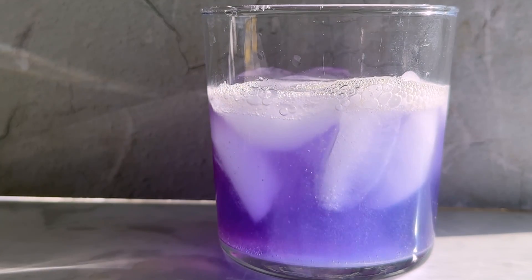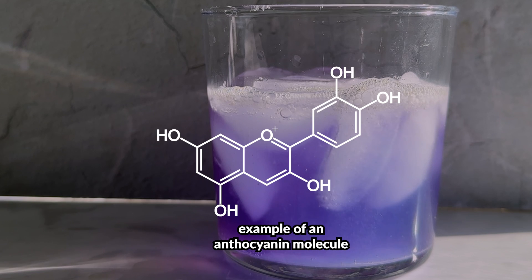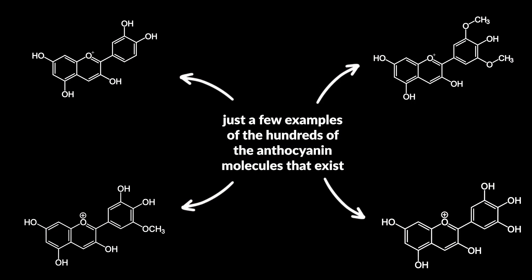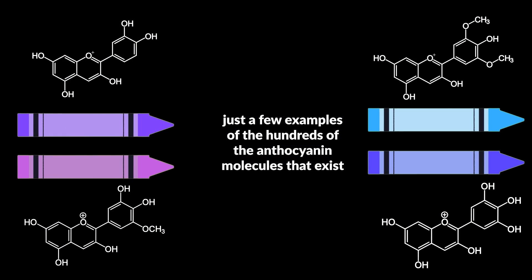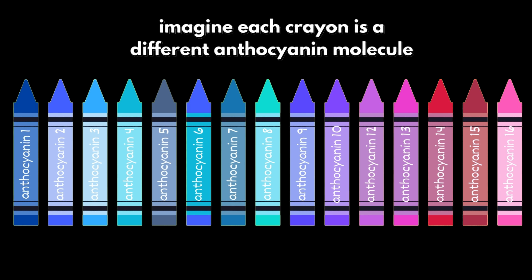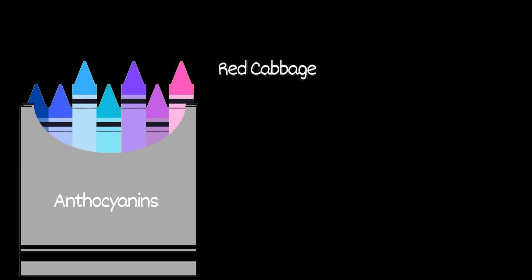Additionally, anthocyanins are actually a large group of similar molecules, so there isn't just one exact type, but there are hundreds of different ones. We can think of these anthocyanin molecules like crayons — imagine a box of crayons of different colors. That's pretty much what's going on with our anthocyanin molecules, but we have a gigantic jumbo box of hundreds of crayons. Most things will be made up of at least a few different crayons or molecules.